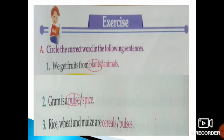Number 3 — rice, wheat, and maize are cereals or pulses. These are cereals, so circle cereals.